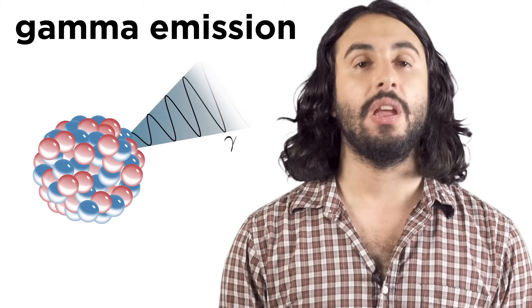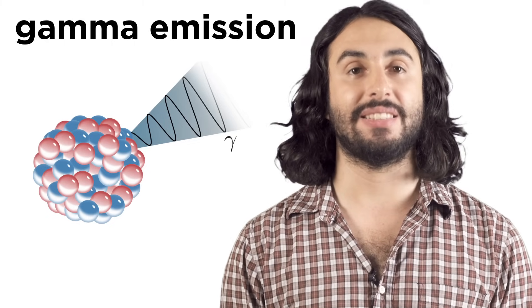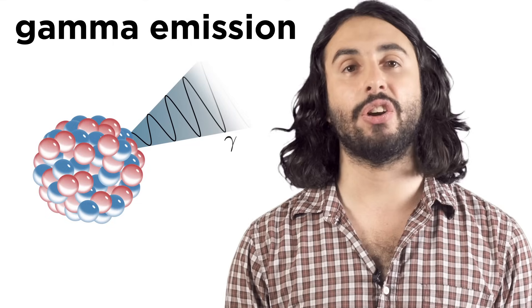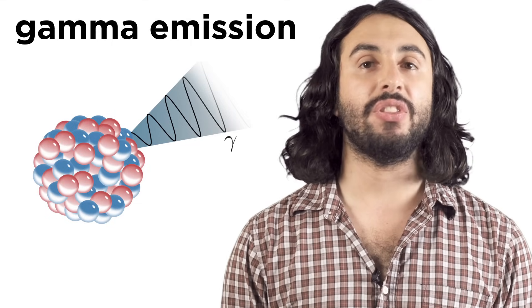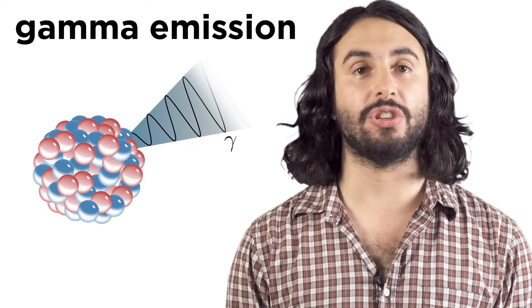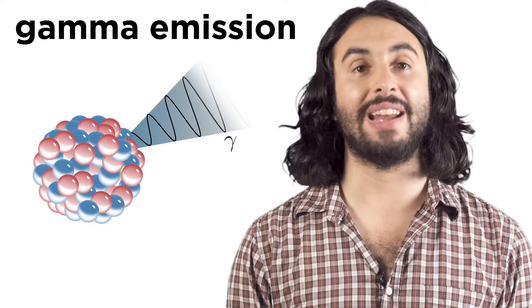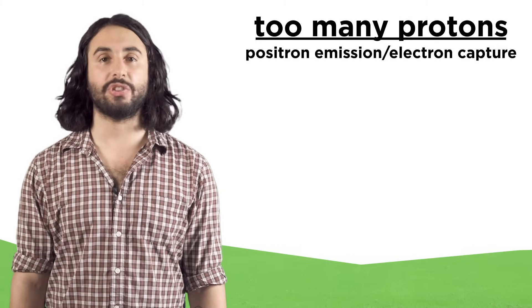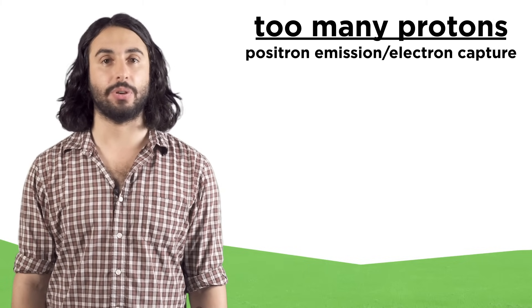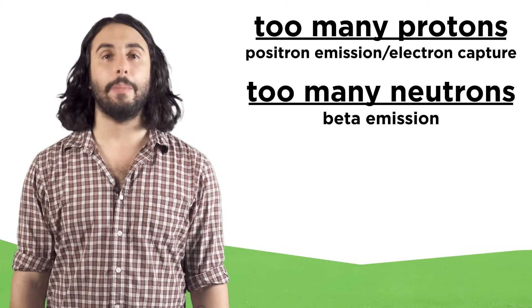And lastly, if a nucleus is in an excited state, it can emit a high energy gamma photon. In this process there is no transmutation because we don't change around any protons or neutrons. So we can predict what kind of nuclear decay a nucleus might undergo by looking at its condition. Is it too large? What's the proton to neutron ratio? Each decay process has its typical cause. Too many atoms, too many protons: positron emission or electron capture. Too many neutrons: beta emission.